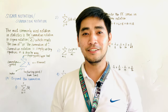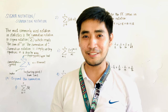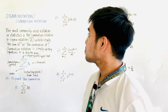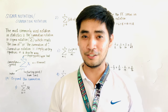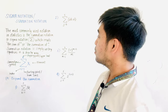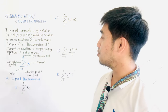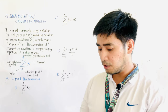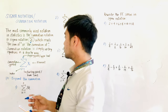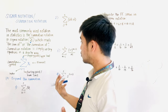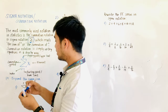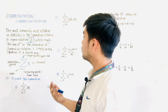Hi, Judgers! Welcome to another segment of Liwag Memorial High School Senior High School Math TV. For today's video lesson, we will talk all about sigma notation or summation notation. The most commonly used notation in statistics is the summation notation, or what we call the sigma notation. The symbol is the Greek letter sigma, which reads 'the sum of' or 'the summation of.'